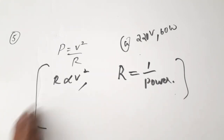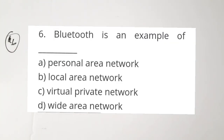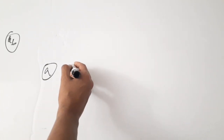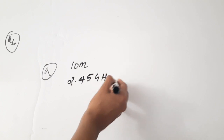The sixth question is from computer networks: Bluetooth is an example of dash. Options: A — Personal Area Network, B — Local Area Network, C — Virtual Private Network, D — Wide Area Network. The correct answer is A, Personal Area Network. Bluetooth has a range of 10 meters and operates at a frequency of 2.45 GHz. It is an IEEE standard medium of communication and is a personal area network. Correct answer is option A.